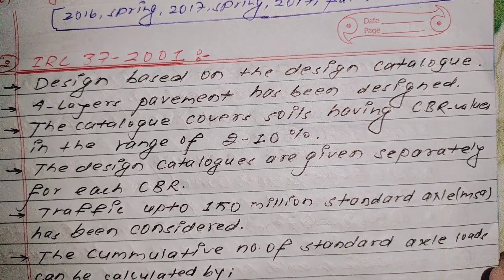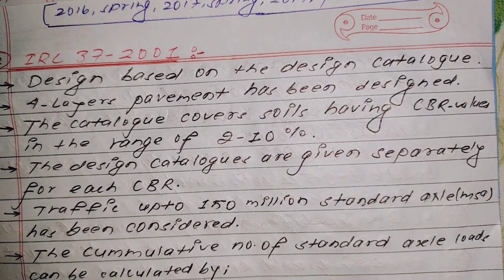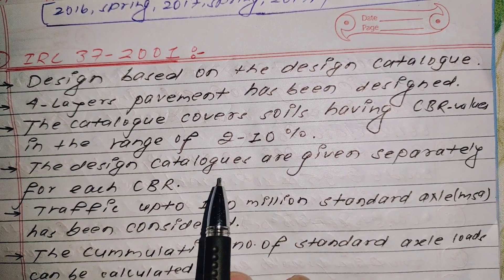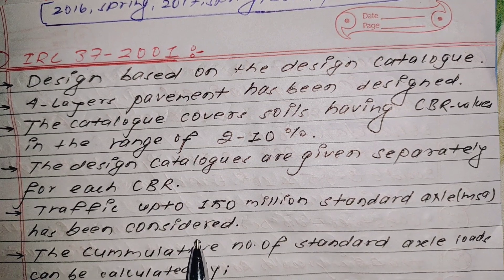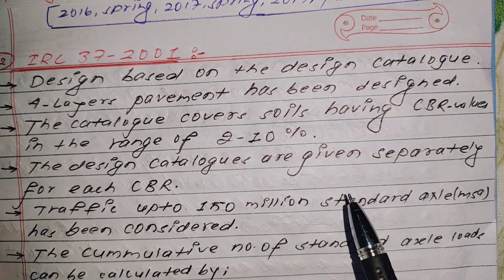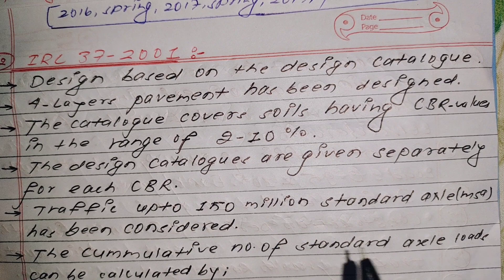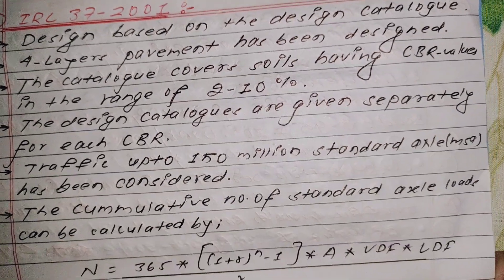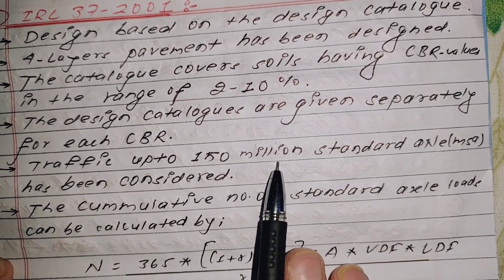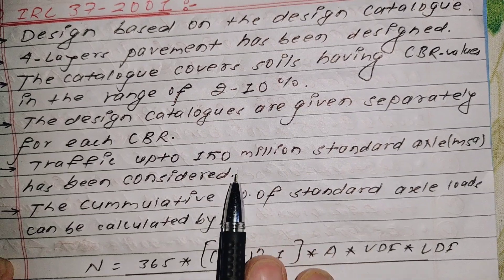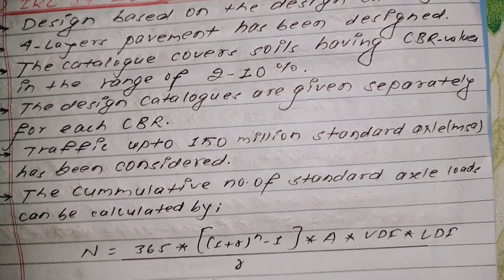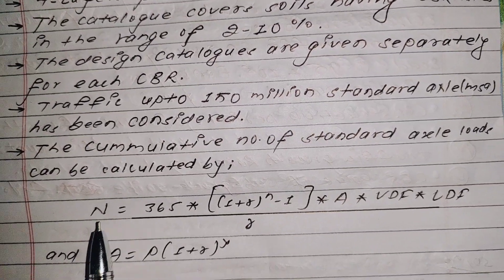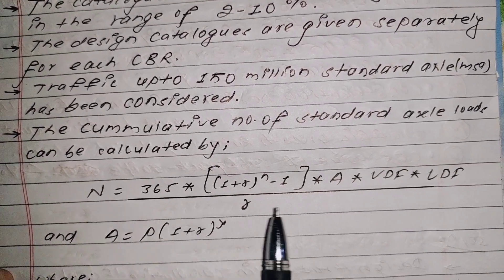We take the catalogue based on the CBR. Traffic from 10 MSA or 10 to 150 MSA has been considered. The cumulative number of standard axles is calculated using a formula. The formula is used in the method of flexible pavement design.